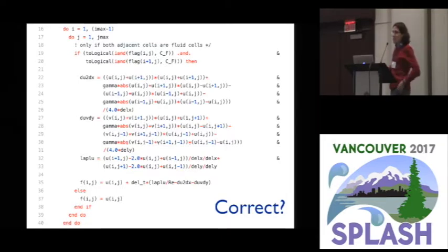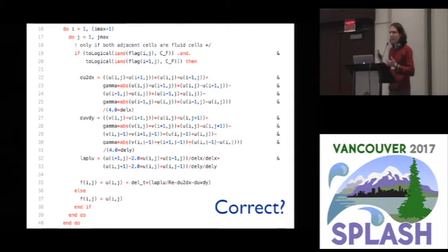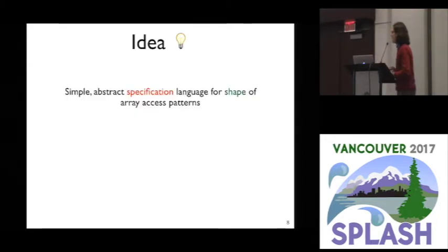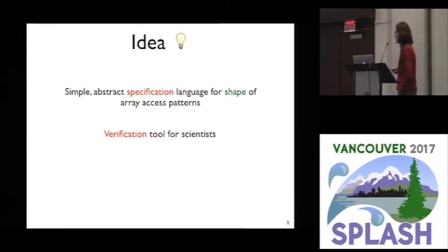Scientists tend to do testing. Sometimes they look at it and see if it smells right — does this look like a fluid simulator when they run it? They might check against some real-world data or analytical solutions. But as we looked at code, we saw quite common patterns, and thought maybe we could build a verification tool — a lightweight verification tool — along with a simple specification language for the shape of array access patterns, for scientists to use.